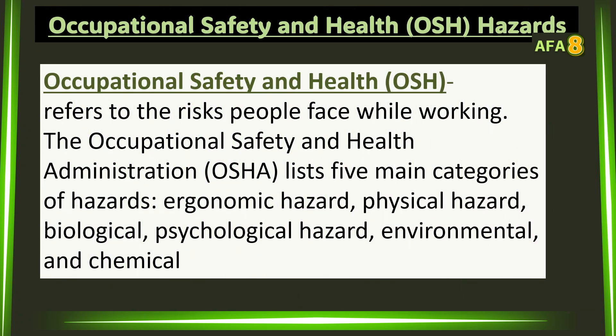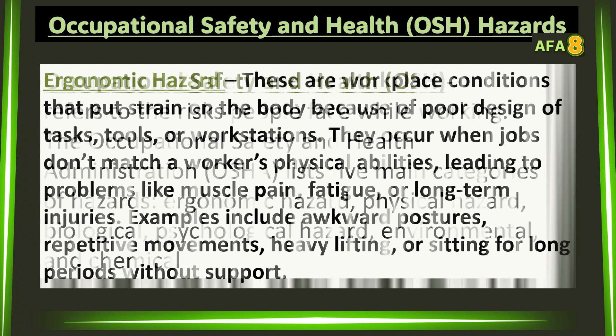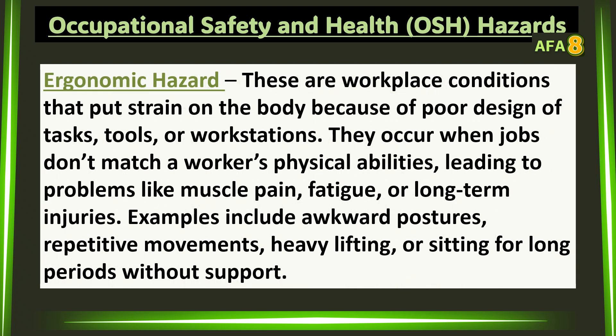Occupational Safety and Health refers to the risks people face while working. The Occupational Safety and Health Administration (OSHA) lists five main categories of hazards: ergonomic hazard, physical hazard, biological hazard, psychological hazard, environmental, and chemical. Ergonomic hazards are workplace conditions that put strain on the body because of poor design of tasks, tools, or workstations. They occur when jobs don't match a worker's physical abilities, leading to problems like muscle pain, fatigue, or long-term injuries. Examples include awkward postures, repetitive movements, heavy lifting, or sitting for long periods without support.